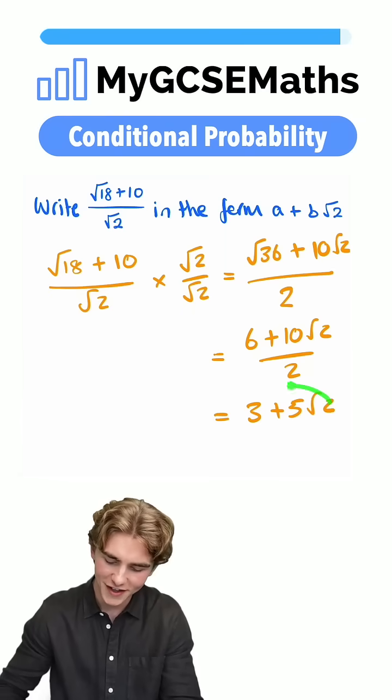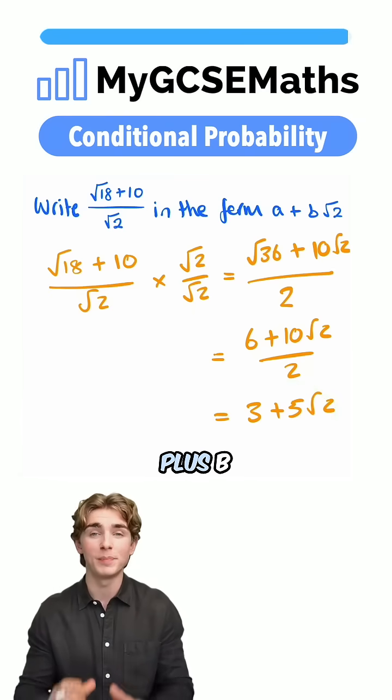So that gives us our final answer in the form a plus b root 2, which is 3 plus 5 root 2.